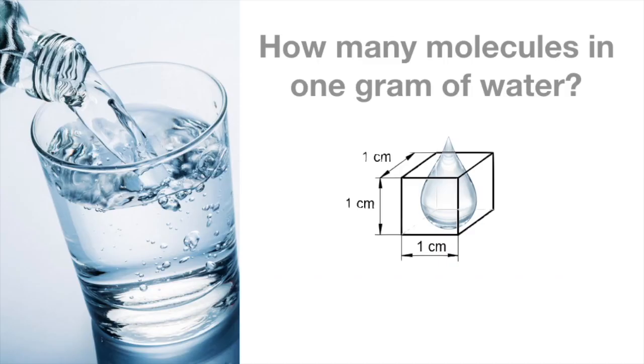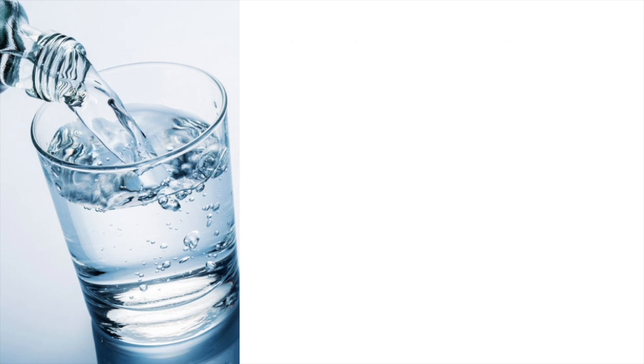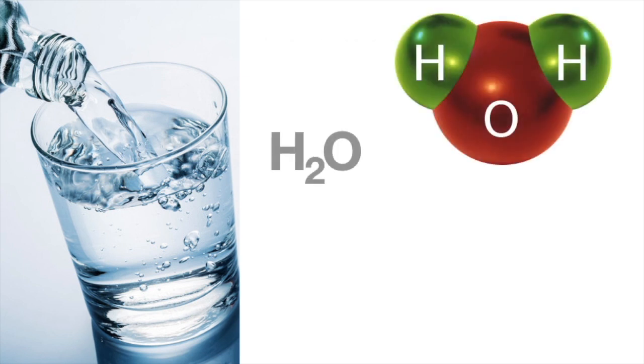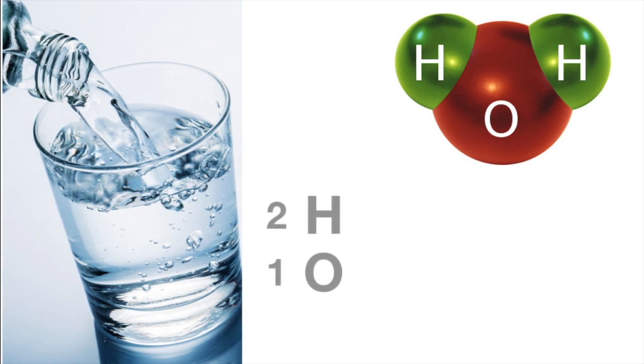Let's calculate the number of molecules in one gram of water. We start by figuring out the mass of a single molecule of water. So as we all know, the chemical formula for water is H2O, which of course means that it's made up of two atoms of hydrogen and one of oxygen.